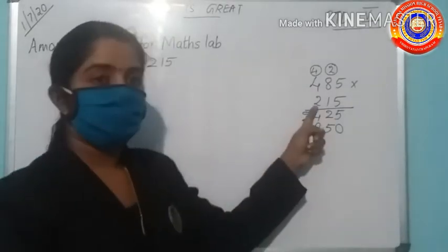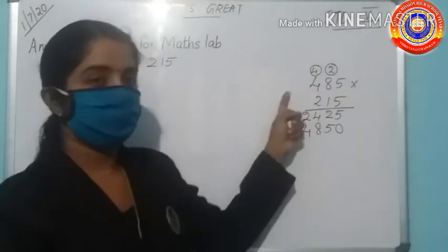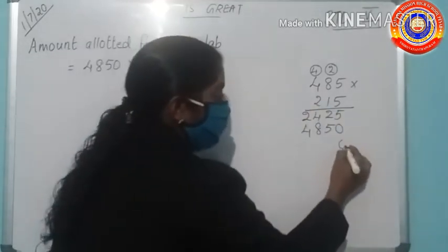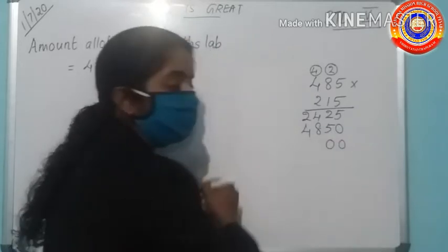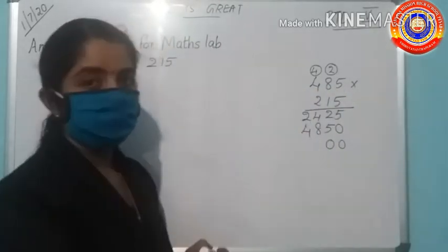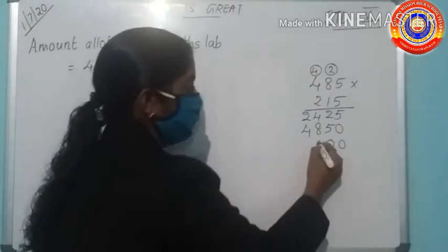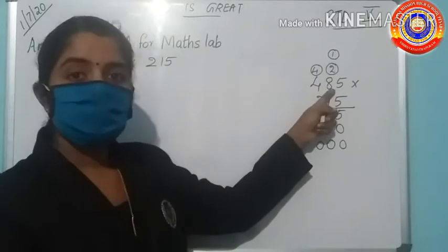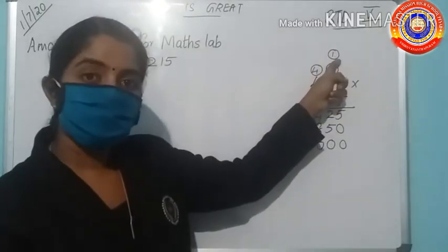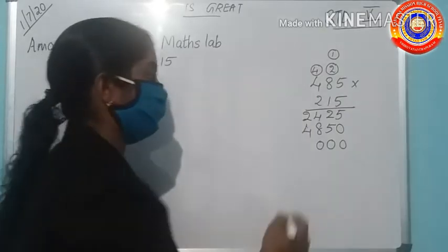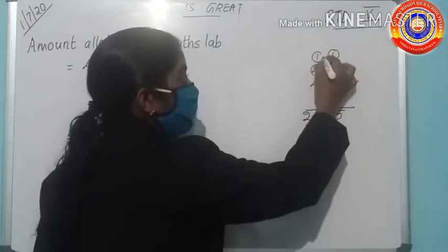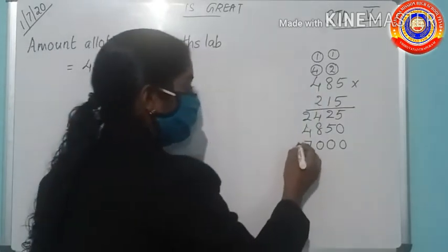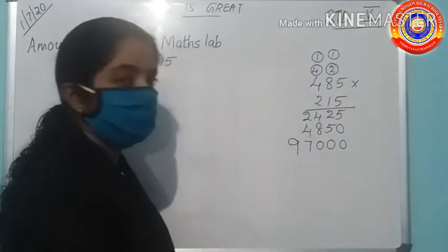Then you have to multiply the number in the hundreds place with these three numbers. Before that, you have to add 0 in the ones and tens place. Then 2 into 5 is 10, 0, 1 carry. Then next number, 2 into 8 is 16 plus 1, 17, carry over 1. Then 2 into 4 is 8, 8 plus 1 is 9.